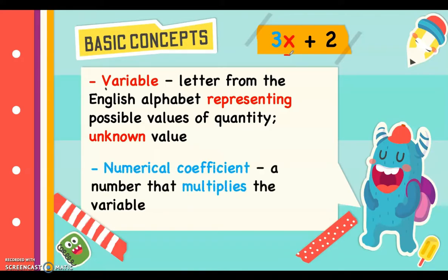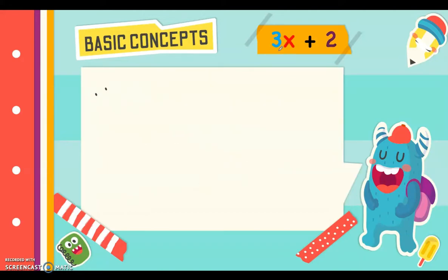Next, we have numerical coefficient. A numerical coefficient is a number that multiplies the variable. So in 3x plus 2, 3 is the numerical coefficient since it multiplies the variable x. Note that any letter in the alphabet can be a variable, but x is the most common. Any number beside the variable is called the numerical coefficient.